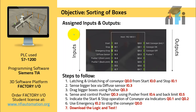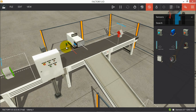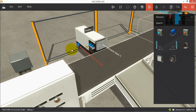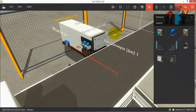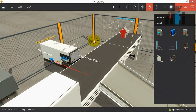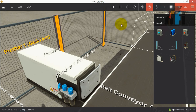The first step is to assign inputs and outputs. The start button is assigned to I0.0, stop to I0.1, emergency stop to I0.2. The diffuse sensor — which senses the larger box — is assigned to I0.3. We also have two more sensors: pusher one front limit and pusher one back limit, which determine the position of the pusher.